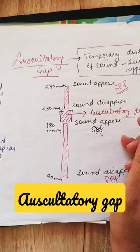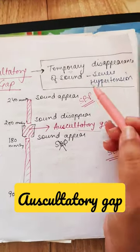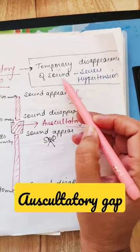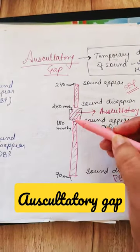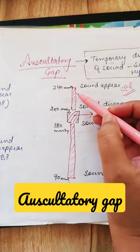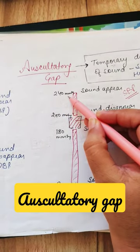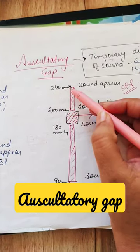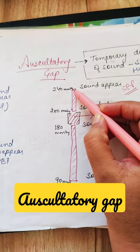What is auscultatory gap? Auscultatory gap is the temporary disappearance of sound in severe hypertension. For example, a patient came with BP 240 mmHg systolic. When you inflate the cuff to 250 and then deflate it, at 240 systolic you will get a sound.